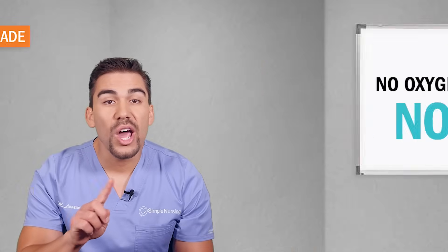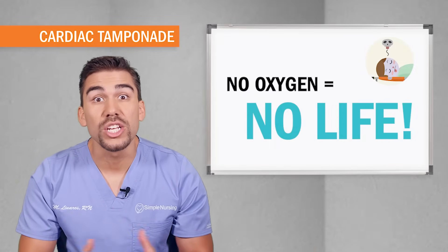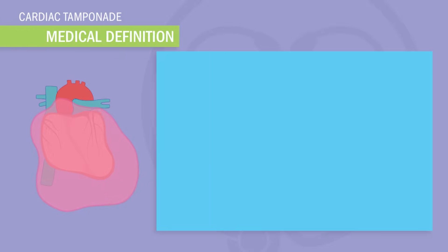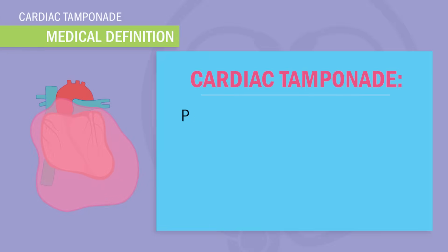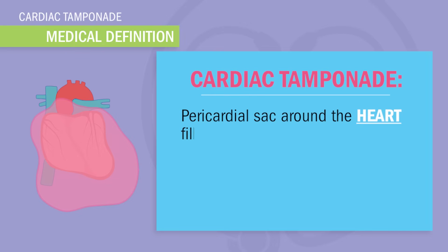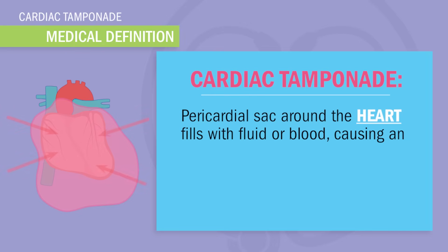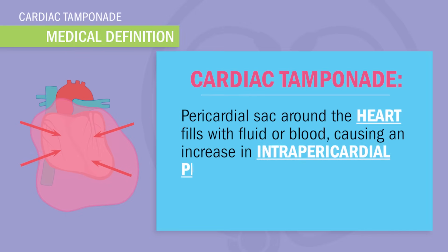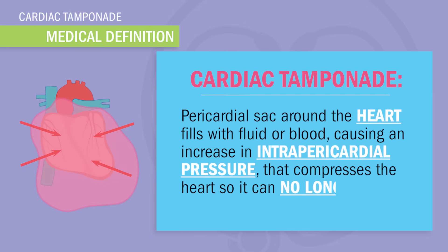Remember this one thing we always say here: oxygen is the money of the body. No money, no honey — so no oxygen, no life. The fancy medical definition for cardiac tamponade is when the pericardial sac around the heart fills with fluid or blood, causing increased pericardial pressure that compresses the heart so the heart can no longer fill with blood. If the heart can't get blood in, it can't get blood out, and this low cardiac output means low oxygen put out to the body.